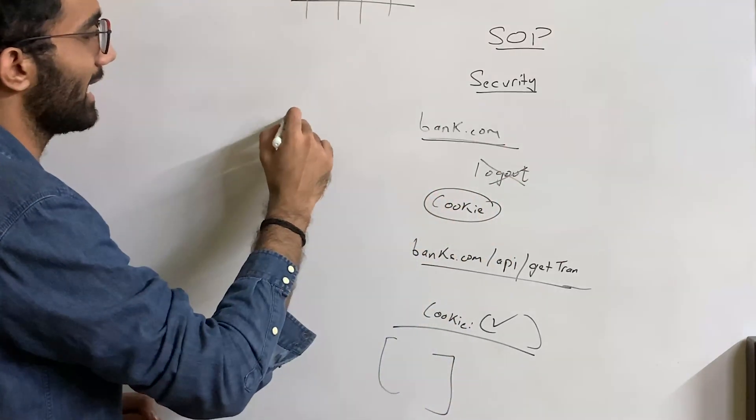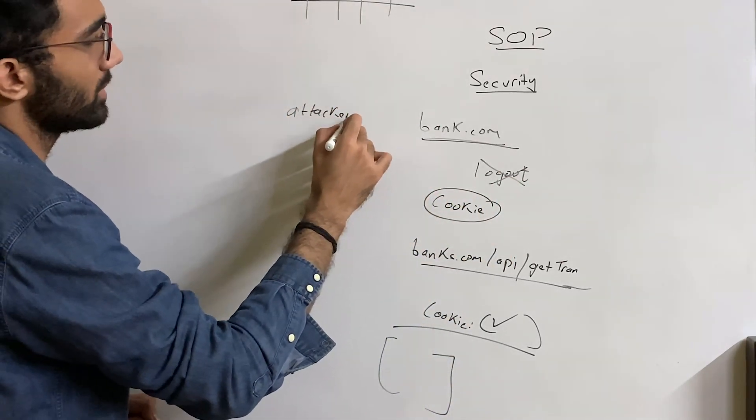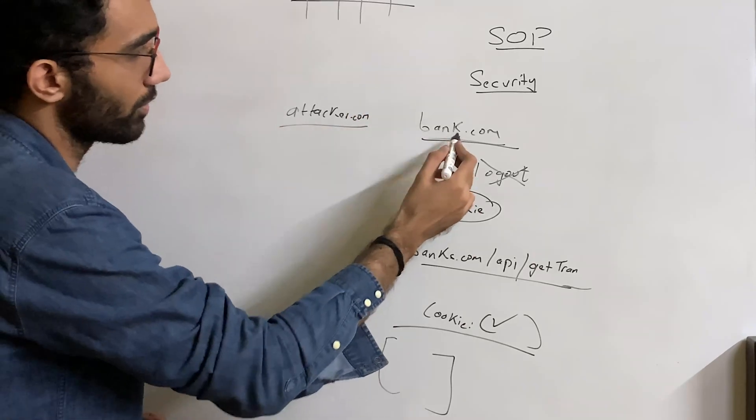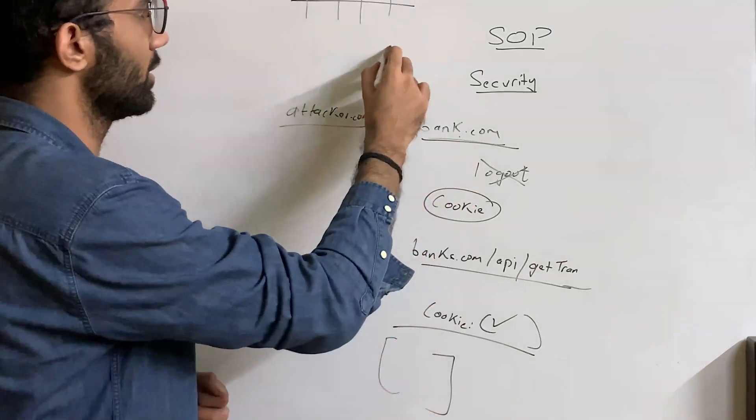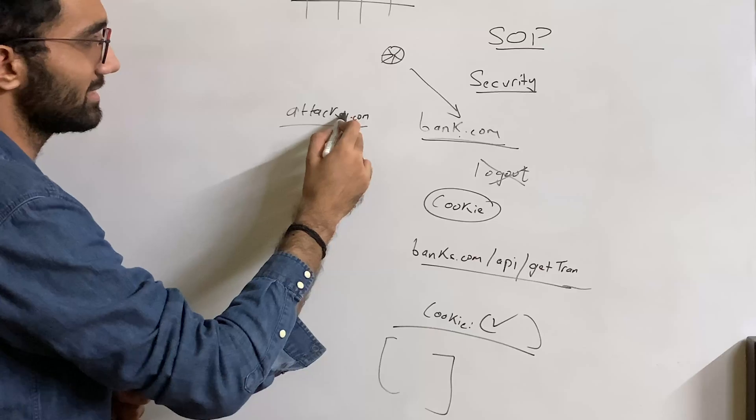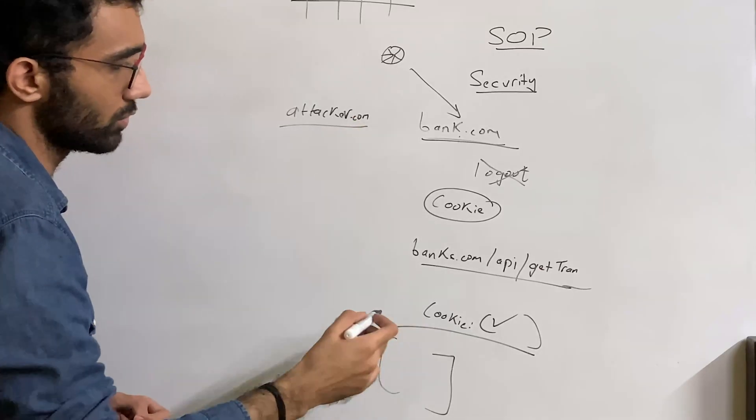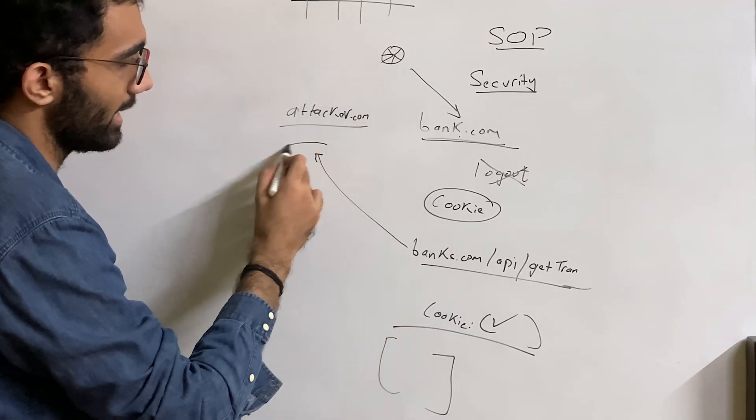Let's say you are now visiting attacker.com. Now remember that at this point also you are logged into bank.com, so your browser remembers that you have logged in. Let's say this attacker.com also tries to call the same API.